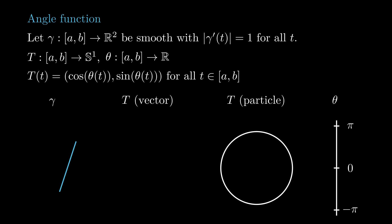For example, if gamma is a line, its tangent indicatrix is constant, and theta can be chosen to be constant as well. When the curve is not a straight line anymore, then theta keeps track of the change in direction.